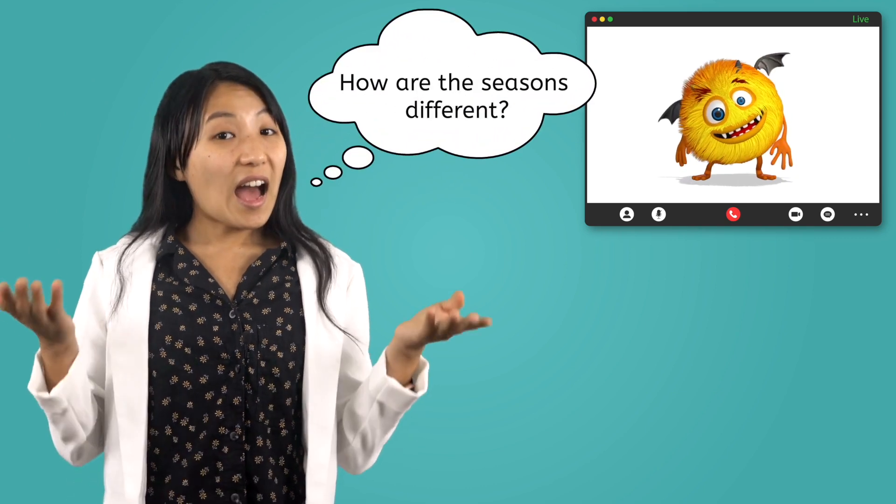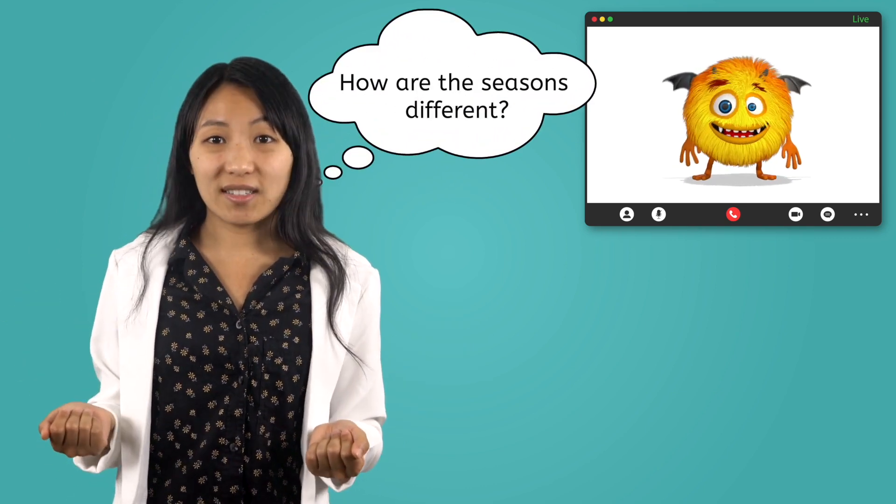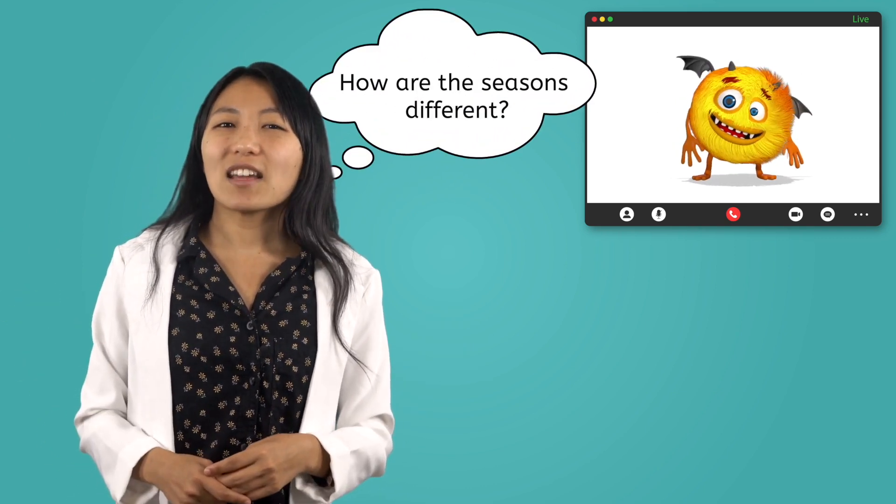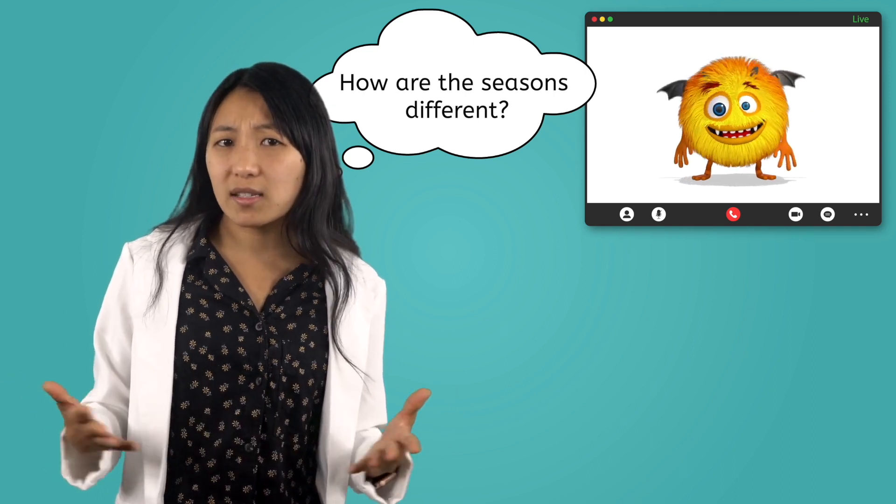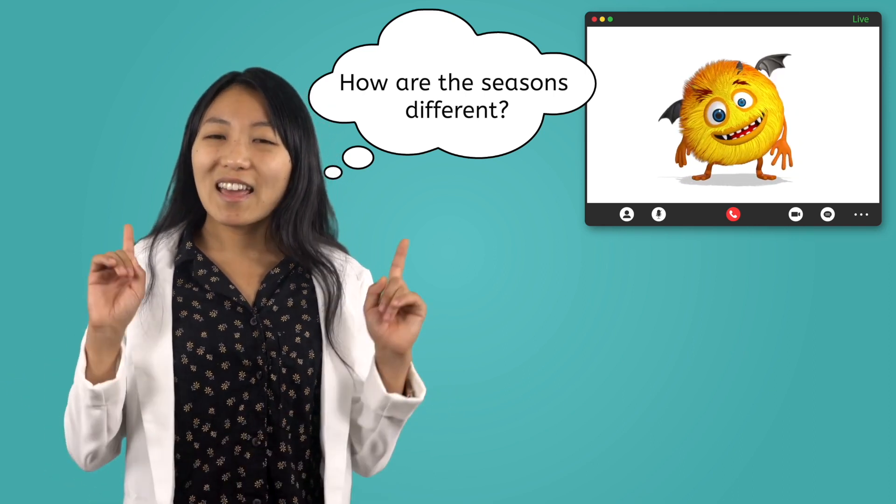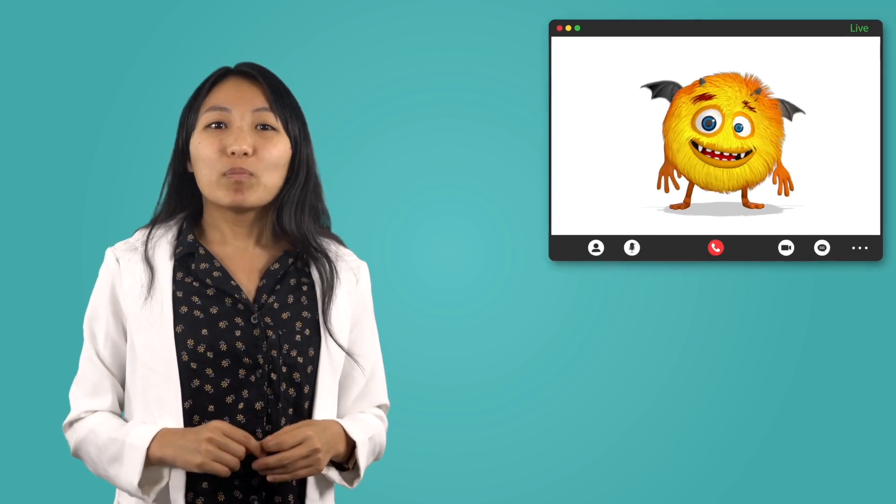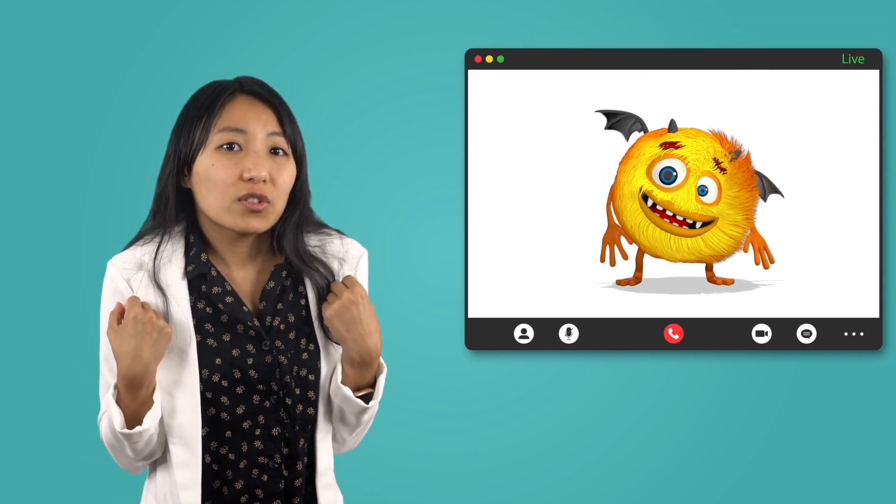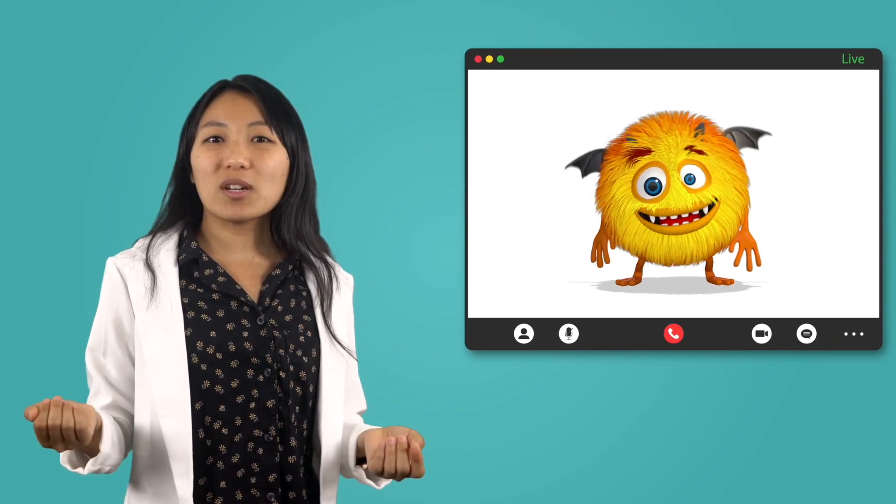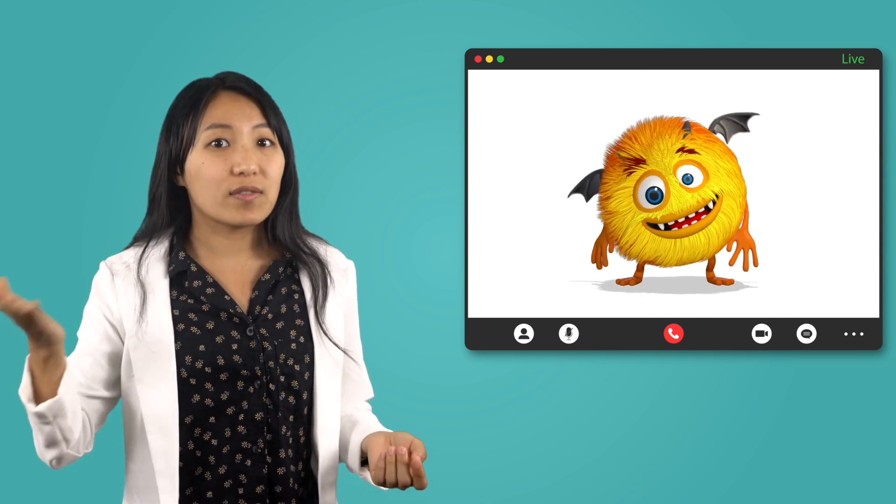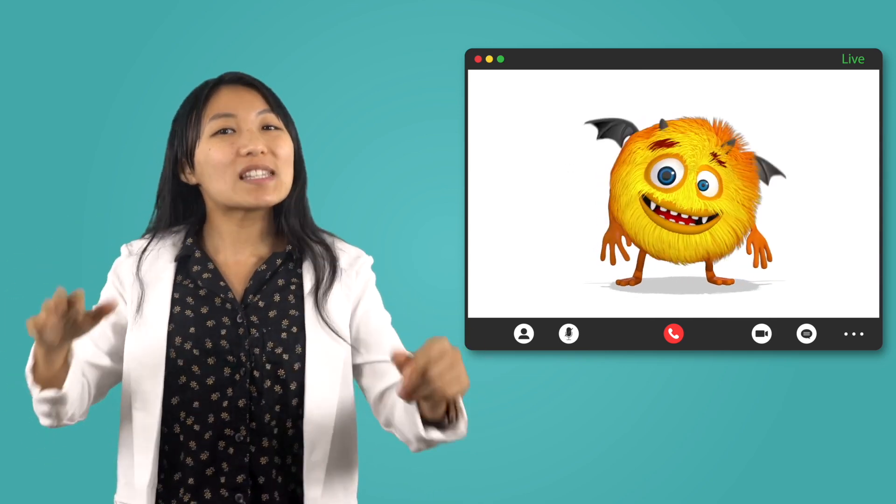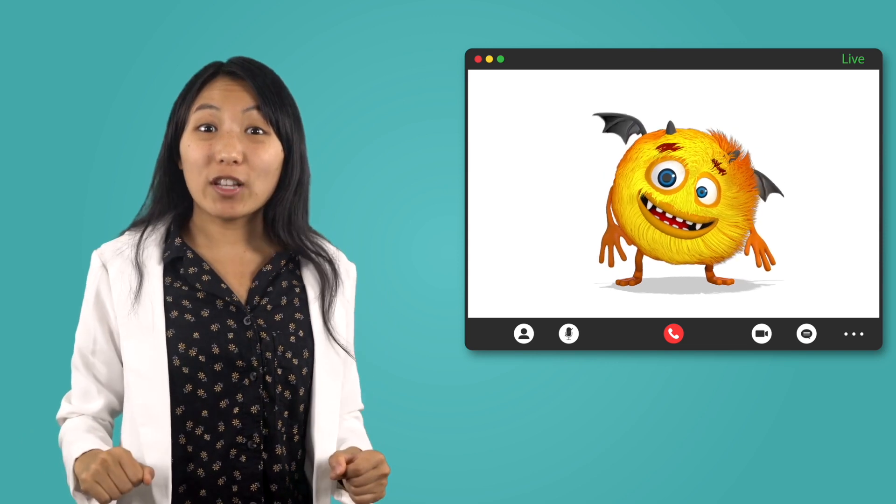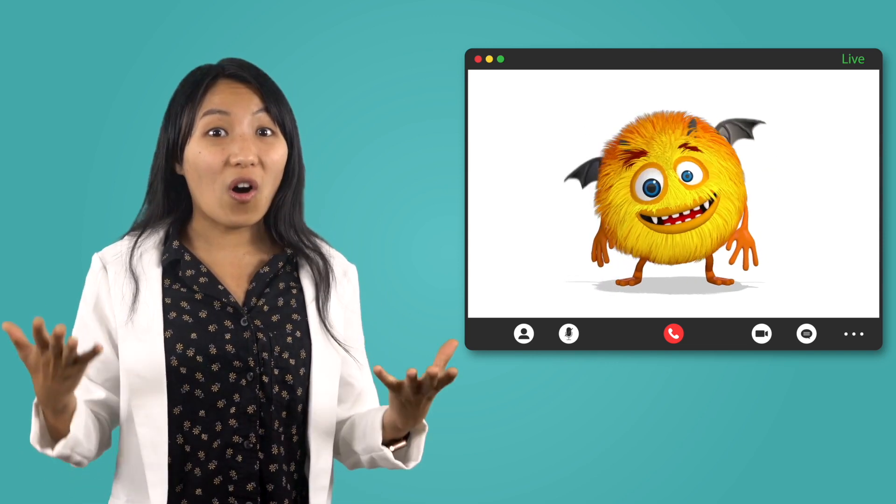So, Zeke, let's review what we've learned about seasons on Earth. How are the seasons different? We learned that they are different in many ways, but the biggest difference is the weather. Between the cold of winter, the rainy days of spring, the hot days of summer, and the cool, crisp days of fall, you have a lot to look forward to all year long.